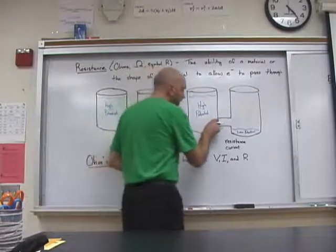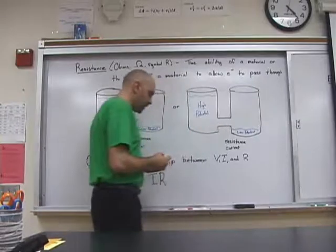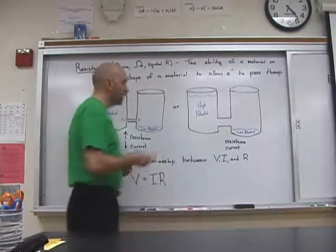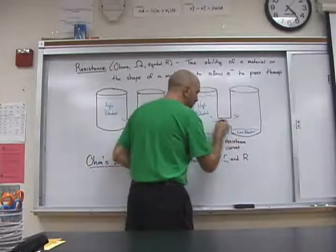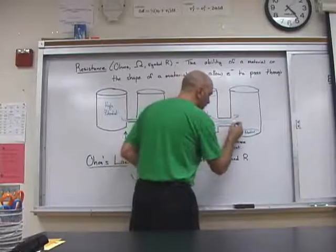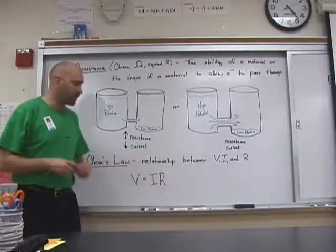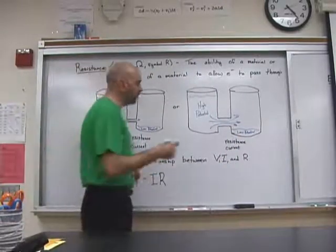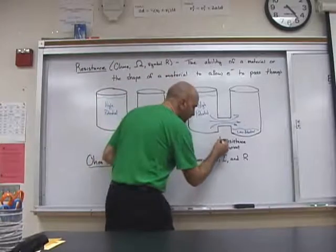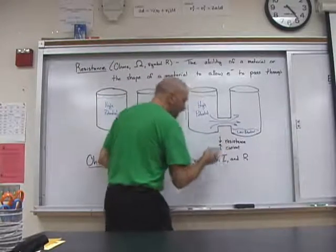But, let's move over to this one. If I poke a hole this large, what can I say about the amount of water? A lot of water is going to be able to flow through there. Or, a lot of electrons are going to be able to flow through there. So, this one has low resistance and high current.